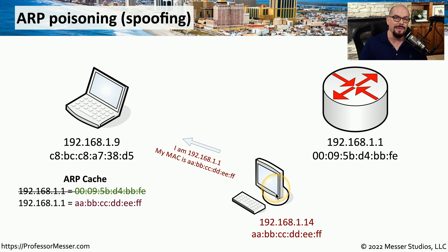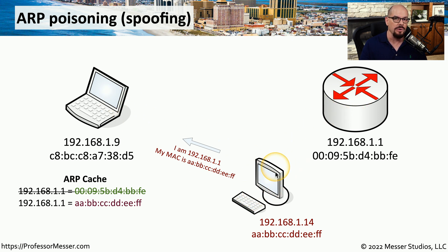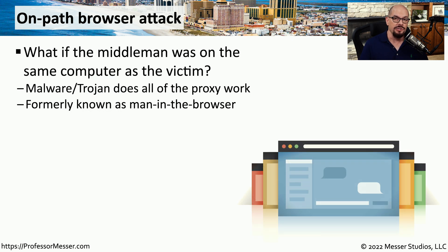To complete this attack, the attacker would perform exactly the same ARP poisoning to the router, and now it's sitting in the middle of the conversation watching all of the traffic that goes back and forth. There are a number of limitations to an ARP poisoning attack — someone first has to gain access to your network and then be on the same IP subnet as the two devices they would like to intercept.